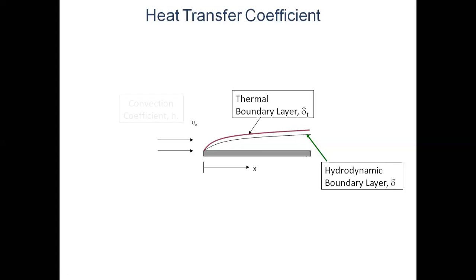This is all about laminar flow and laminar boundary layer, but flows are not always laminar — they can be turbulent also. Initially flow can be laminar, then transition into turbulent. To classify laminar and turbulent flow, we use the Reynolds number Rex. If it exceeds five lakhs, the flow is turbulent; within five lakhs it is laminar. When laminar, we saw how to calculate thickness and heat transfer coefficient.